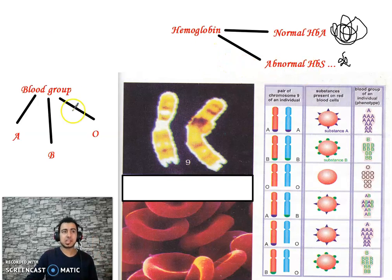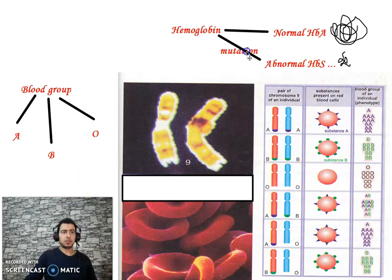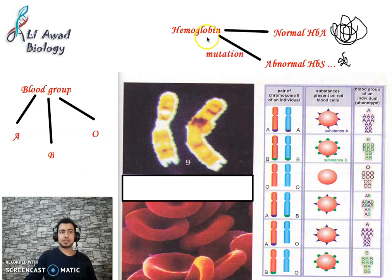Why is HbS abnormal? Due to mutation — a mutation in the hemoglobin gene produces abnormal hemoglobin HbS.